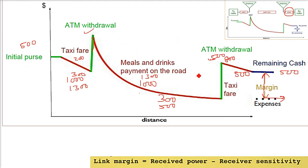This margin is what is the remaining cash you have versus the expenses. The difference between them is the margin. That is the link margin. Your expenses should not be higher than the money you have. The cash you have after all the losses should not be less than a certain number. The link margin is just remaining cash and expenses difference. That is the received power minus receiver sensitivity.